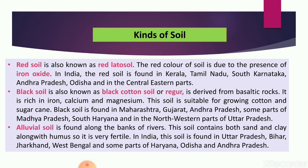Alluvial soil is found along the banks of rivers. It is carried by rivers over long distances and deposited on low-lying plains. This soil contains both sand and clay and is very fertile, being rich in humus. Turmeric, sugarcane, and paddy grow very well in alluvial soil. It is found in low-lying areas of Haryana, Uttar Pradesh, Bihar, Jharkhand, West Bengal, and the coastal areas of Odisha and Andhra Pradesh.